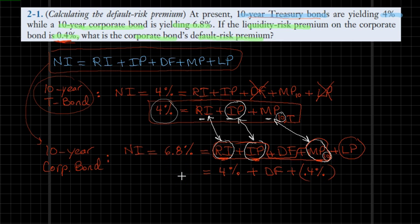The rest of the problem is just making some algebraic calculations. I can move the 4% and the 0.4% to the left-hand side of our equation. So 6.8% minus 4% minus 0.4%. I believe that figure would be 2.4%. Yes, that should be right.